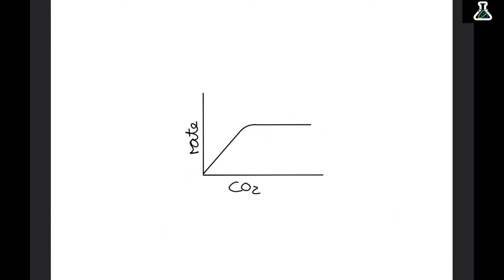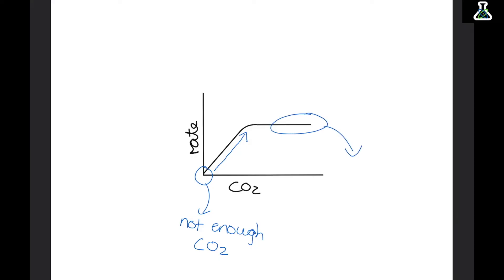The last limiting factor you need to know about is carbon dioxide. If there's not enough carbon dioxide, we don't have anything to turn into glucose and oxygen, so photosynthesis just can't happen. Just like the graph for light intensity, as carbon dioxide concentration increases we've got more of it to use, so it speeds up. However, just the same as the light graph, it flattens out because something else has become limiting.